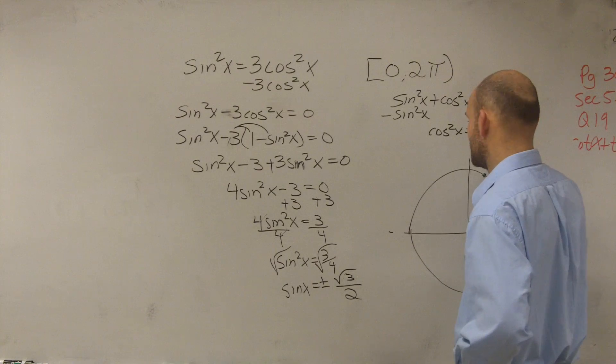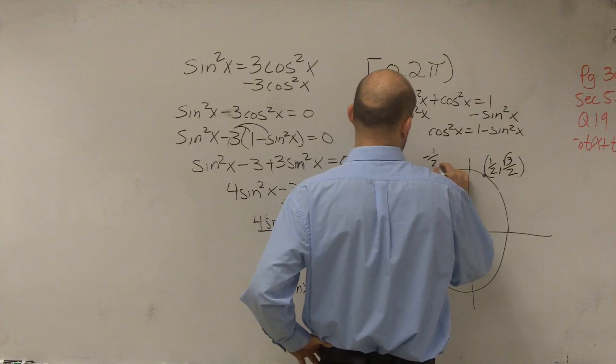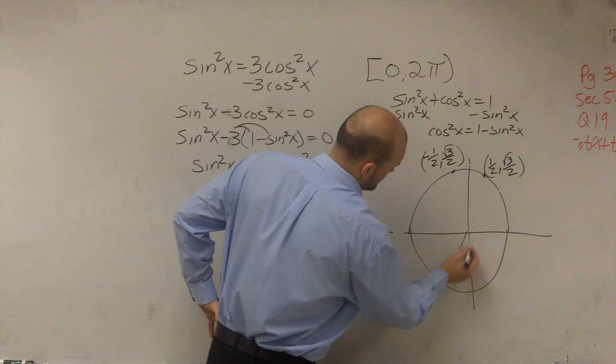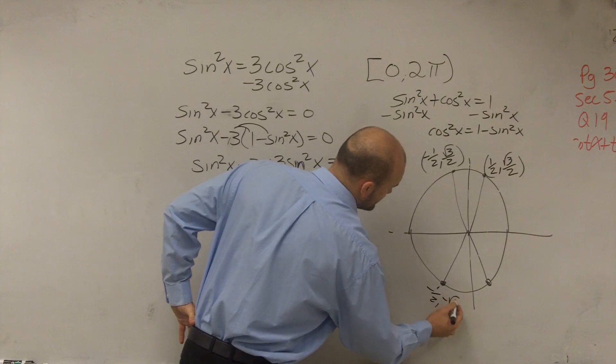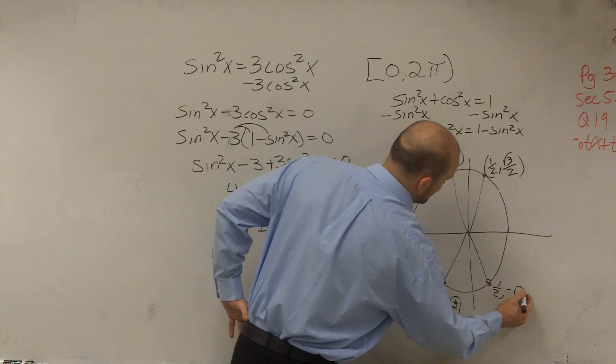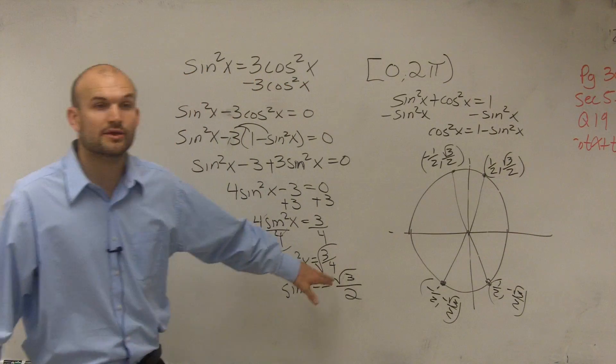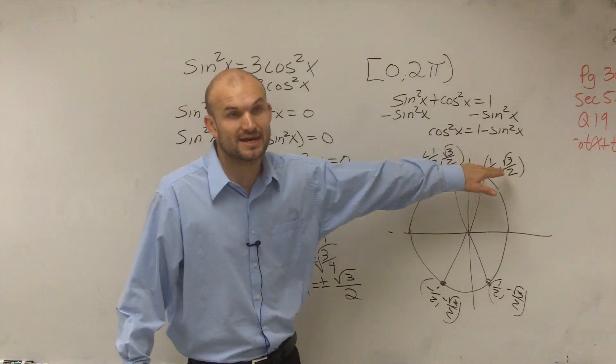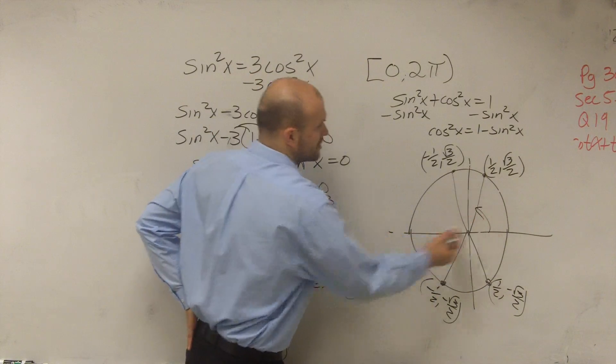Well, I have this point which is at 1 half comma square root of 3 over 2. I have this point which is negative 1 half comma square root of 3 over 2. And then at this point which is 1 half comma negative square root of 3 over 2. Because since I took the square root, it has to be positive and negative. So here are my two positive angles and here are my two negative angles. So by knowing the unit circle, I have to determine what this angle is.